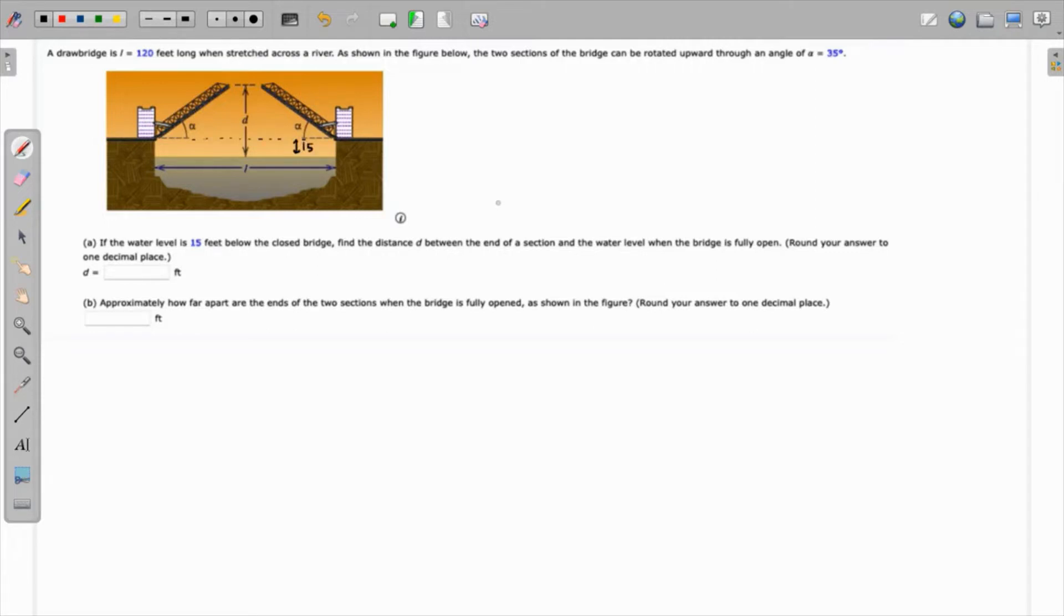We have to find the distance d between the end of a section and the water level when the bridge is fully open. Let's divide this into some pieces. I'm going to join these two parts. The figure is symmetrical, so I'm going to drop a dotted line from here. Let's say this distance is x, so obviously this particular distance is also x, and this distance is y.